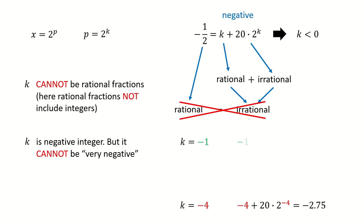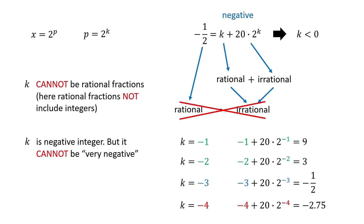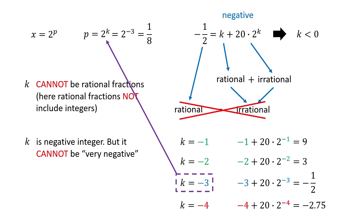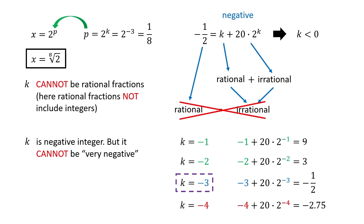If k is negative 1, then the right hand side equals 9, so it doesn't work. If k is negative 2, then the right hand side equals 3, so it doesn't work. If k equals negative 3, then the right hand side equals negative 1 half, which equals the left hand side. So negative 3 is our solution. We then plug k back into our equation to solve for p, which equals 1 over 8. Next, we plug p back into our initial substitution to get the final answer for x, which is equal to 2 to the power 1 over 8.